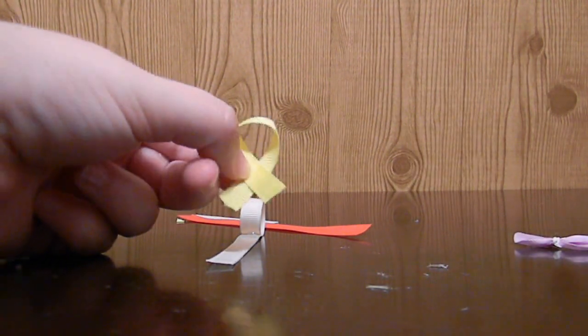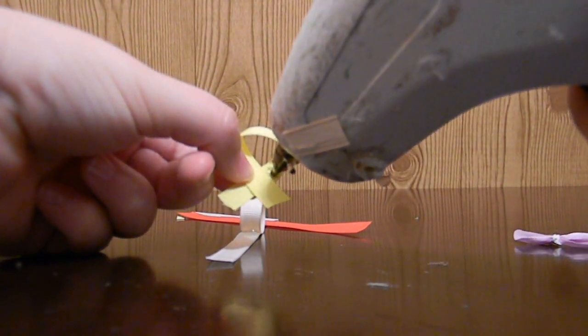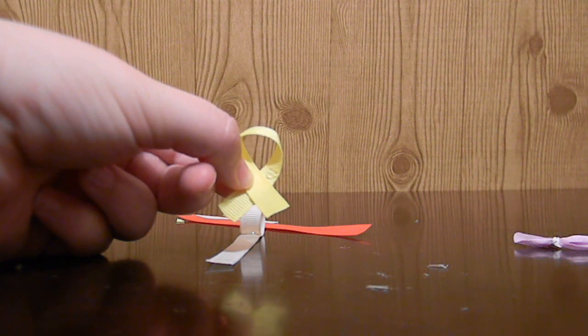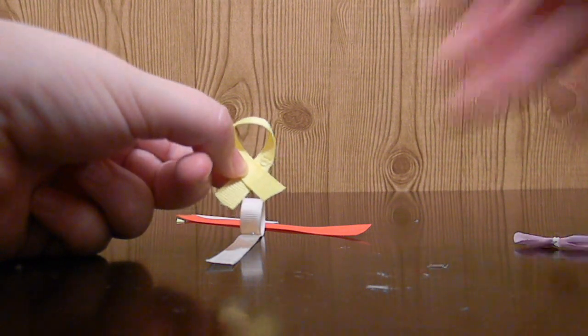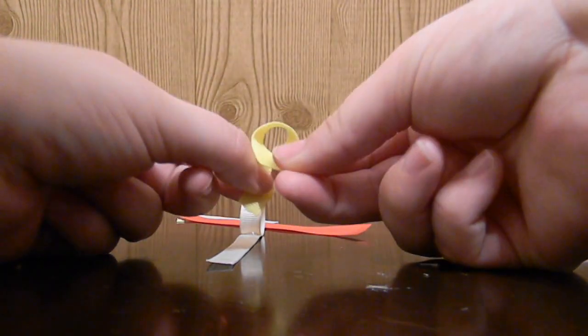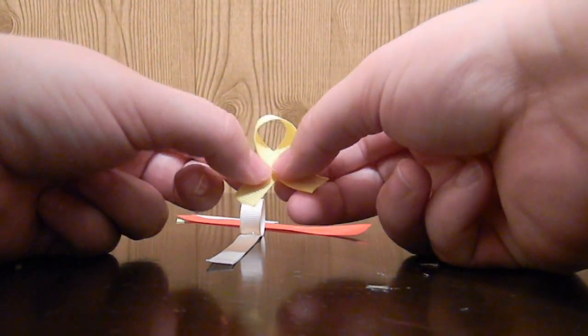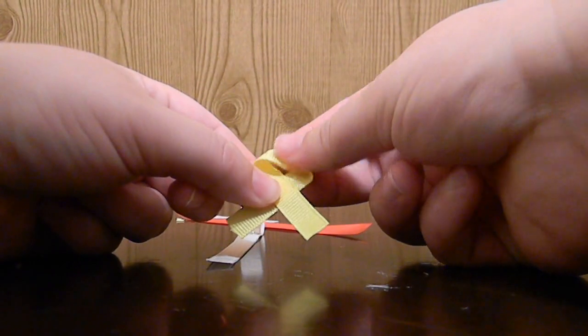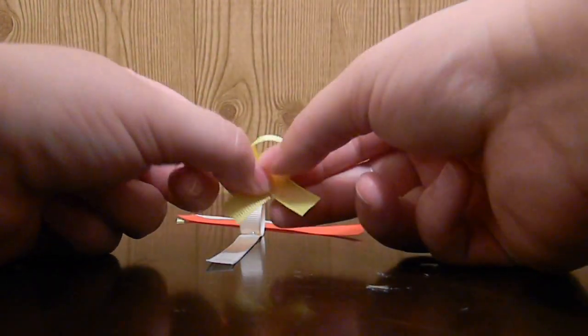What you do is just take your glue gun and put a little glue up there. So you just glue in between there.